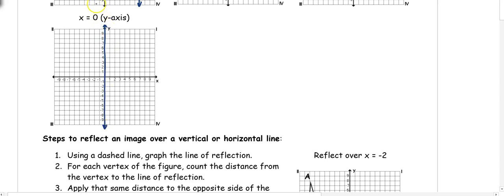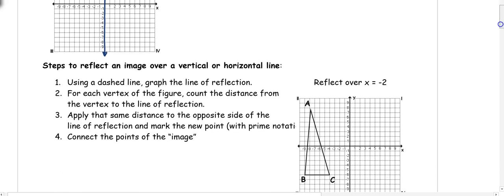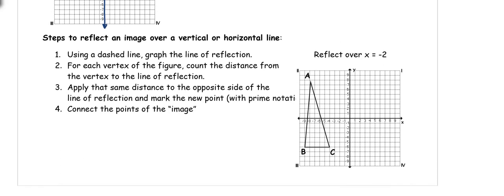Let's look at how to reflect over a vertical or horizontal line. First, use a dashed line to graph the line of reflection. In this case, our line of reflection is x equals negative 2, so at negative 2 I'm going to draw a dotted line onto my coordinate plane. Then at each vertex of my picture — A, B, and C — I'm going to count how far I am from the line of reflection and then use that number to go to the other side.